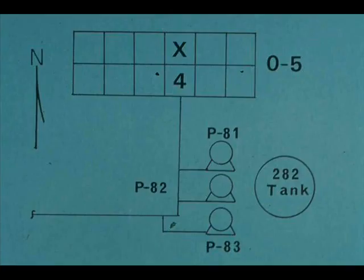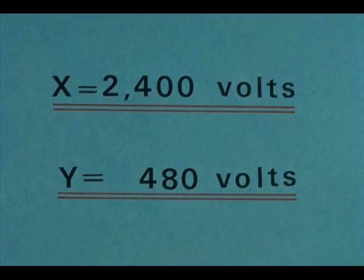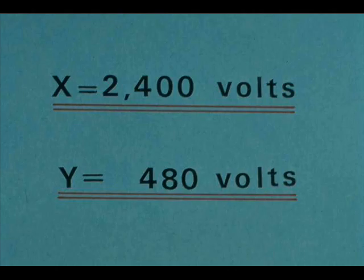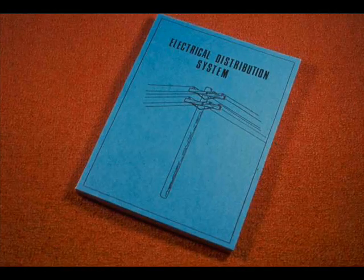Feeders from substations provide power for equipment. From O5 substation, for example, feeder X4 provides power for pumps numbers 81, 82, and 83, west of tank number 282. In one refinery, X means that the feeder carries 2,400 volts; Y indicates 480 volts. This description of an electrical distribution system is incomplete and nonspecific. It is important that you learn your plant system, especially those parts that serve your equipment.